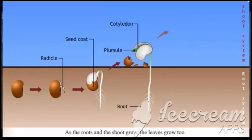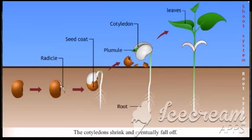As the roots and the shoot grow in size, the leaves grow bigger as the cotyledons shrink and eventually fall off. The young plant now begins to grow tall and strong.